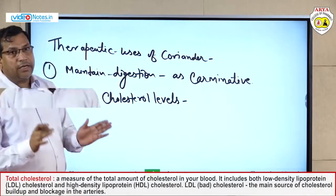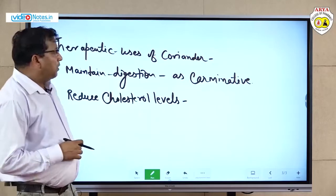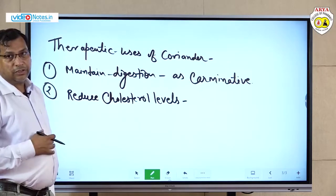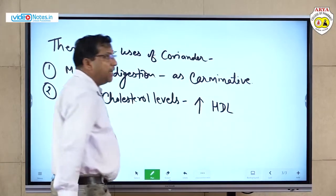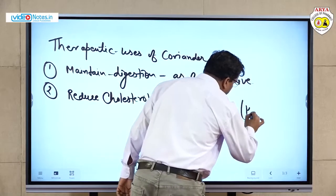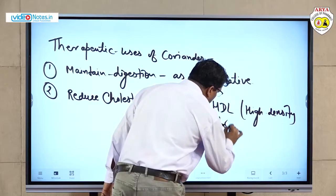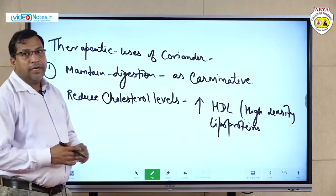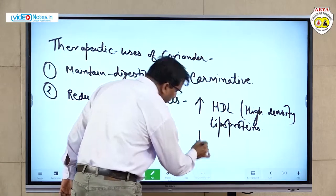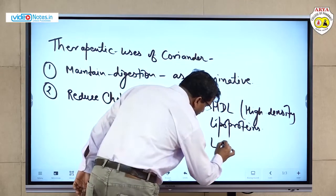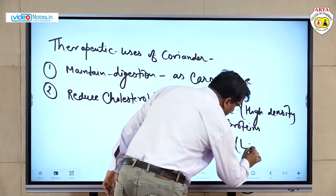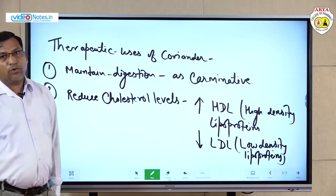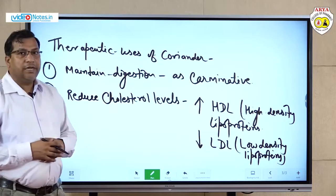There are three types of cholesterol: triglycerides, low density lipoproteins (LDL), and high density lipoproteins (HDL). HDL is the beneficial cholesterol — this is increased in the presence of coriander extract. LDL is the harmful cholesterol — low density lipoproteins are reduced in the presence of coriander extract.